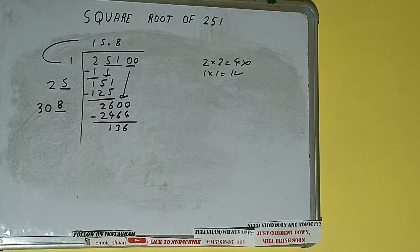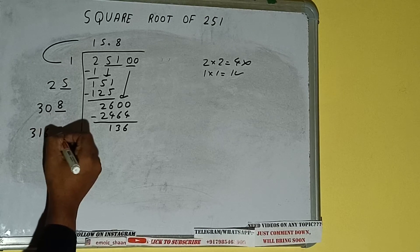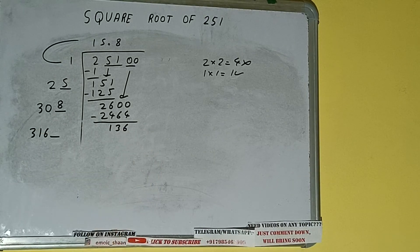Now 308 into eight we did, so add both. So 308 plus eight will be 316 and one digit extra, and this number we need to make it big.